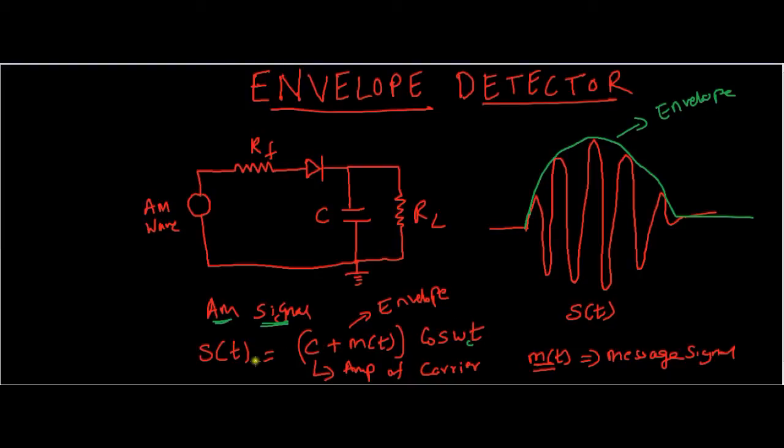This is our AM signal and our message is somewhere lying here. If we somehow devise a tactic to retrieve this part that is c plus m(t) then we can get a message signal back. That's the basic logic of envelope detector. This amplitude carrier plus message signal is called the envelope.